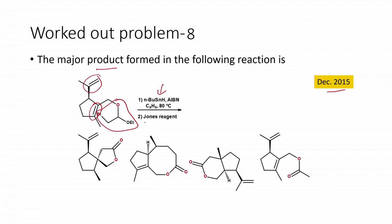The second step is Jones oxidation — whatever intermediate is formed undergoes oxidation. These are the two steps involved. We have four different compounds A, B, C, and D expected after this two-step transformation. Let us see how the reaction actually proceeds.